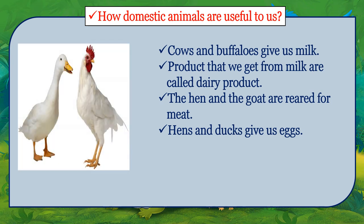Hens and dogs give us eggs. Eggs, like milk, contain a body-building substance called protein. We get protein from eggs and also from milk.